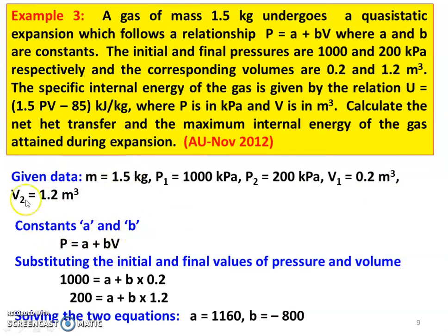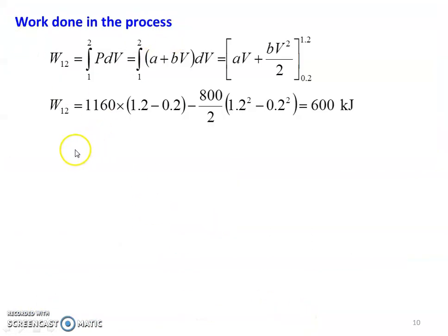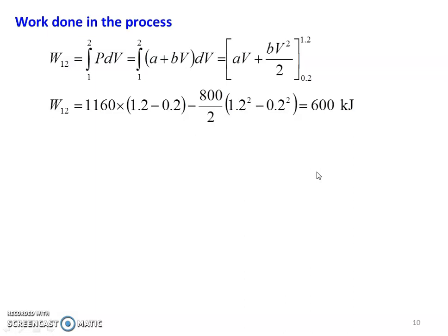The specific internal energy is given by U equal to 1.5 PV minus 85 kilojoules per kilogram, where P is in kilopascal and V is in meter cube. Calculate the net heat transfer and maximum internal energy attained during the process. Substituting initial and final values: 1000 equal to A plus B into 0.2, and 200 equal to A plus B into 1.2. Solving, A equal to 1160 and B equal to minus 800.